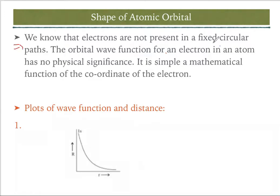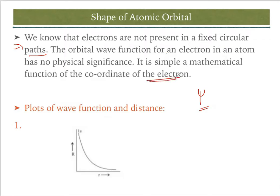Electrons are not present in a fixed circular path, as we have discussed in the wave mechanical model. There is no fixed path for the electron. The orbital wave function ψ for an electron in an atom has no physical significance — it is simply a mathematical function of the coordinates of the electron.